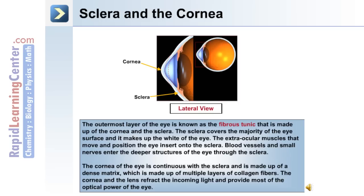The outermost layer of the eye is known as the fibrous tunic, made up of the cornea and the sclera. The sclera covers the majority of the eye surface and makes up the white of the eye. The extraocular muscles that move and position the eye insert onto the sclera, and blood vessels and small nerves enter the deeper structures through the sclera. The cornea is continuous with the sclera and is made up of a dense matrix of multiple layers of collagen fibers. The cornea and lens refract incoming light and provide most of the optical power of the eye.